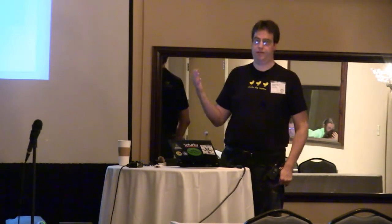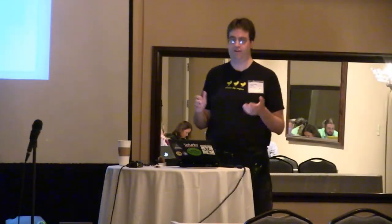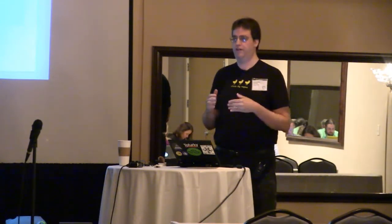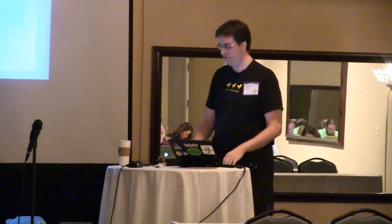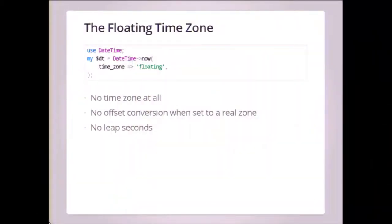You can use all these time zones with the DateTime module. When we create a DateTime object, we can set the time zone when we create the object. If we ask for the time in America/Chicago on that date, it'll tell us what it is. Then we can set the time zone to some other time zone — it adjusts the local time, leaving the UTC time the same. Then you can print that out and figure out what time it is there. This is useful for things like meeting scheduling for people across different time zones — you need to present information in their local time zone.